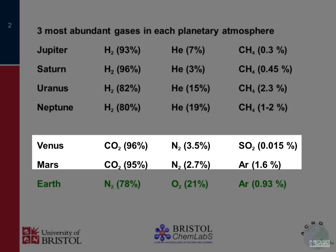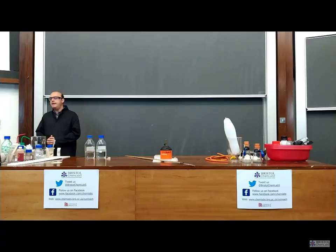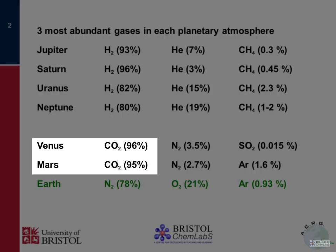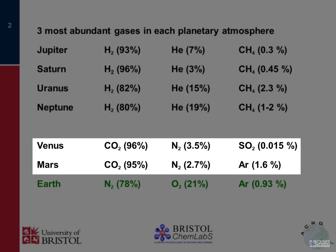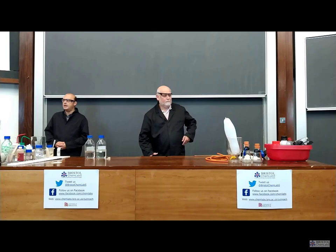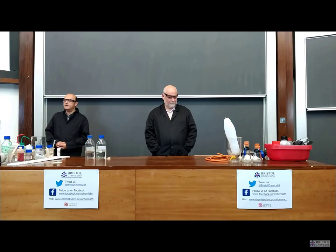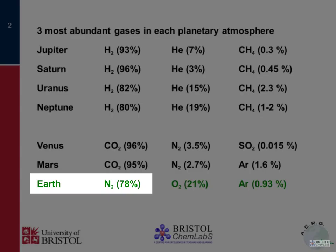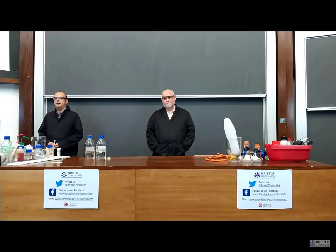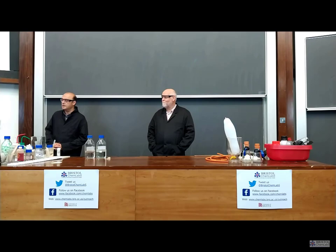Looking at the planets either side of Earth - Venus, closer to the Sun, and Mars, further away - even though Venus has a very thick atmosphere and Mars a very thin one, their compositions are surprisingly similar: mainly carbon dioxide, 95-96% CO2. Nitrogen is the next most abundant, then SO2 for Venus and argon for Mars. Earth sticks out like a sore thumb - it's not dominated by hydrogen, helium and methane, nor by CO2. Earth's atmosphere is mainly nitrogen, then oxygen, then argon, with everything else known as trace gases in tiny quantities.